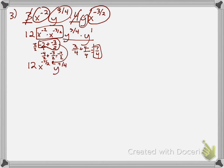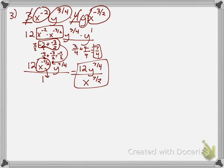Everything looks good except we don't like to leave any exponents negative. If a negative exponent is in the numerator, you drop it down to the denominator to make it positive; if it's in the denominator you bring it up to the numerator. So my final answer has 12 and y to the seven-fourths in the top — that's a positive exponent — and x to the positive seven-halves in the denominator.